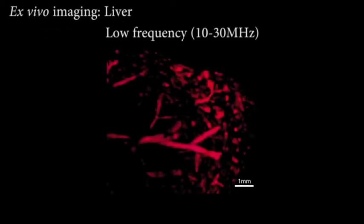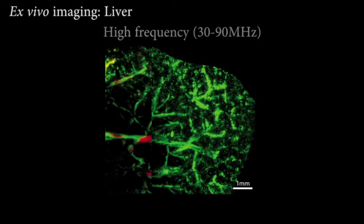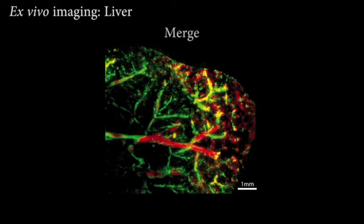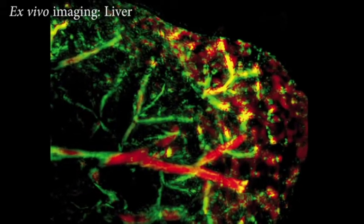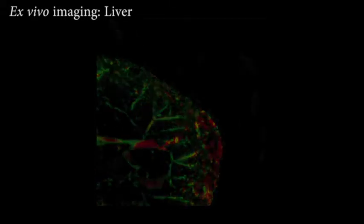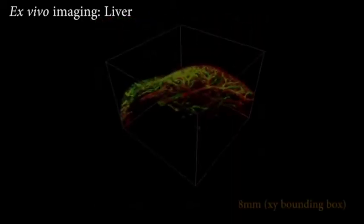As a first case example, we show images of freshly excised liver tissue captured at low and high frequencies. This visualized the vascular anatomy of the organ down to small details. Using this approach, imaging could be performed over a set stack of images, giving a vivid three-dimensional impression of the organ's vascular anatomy.